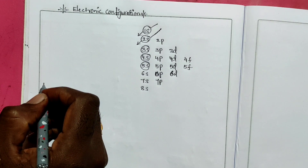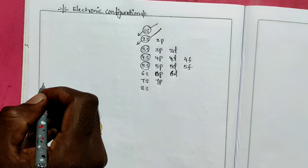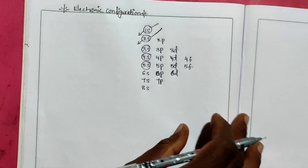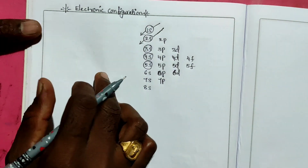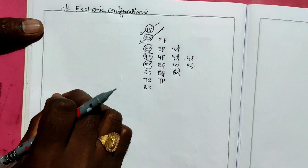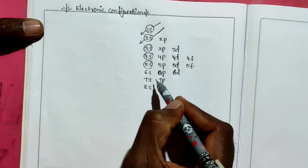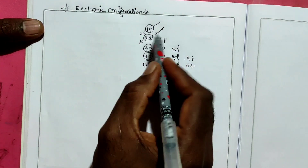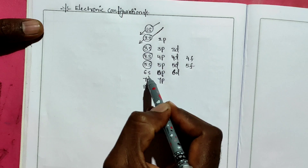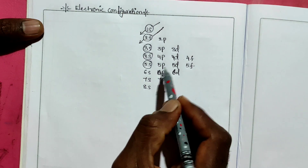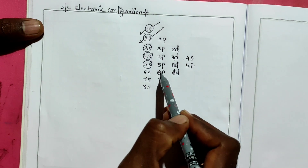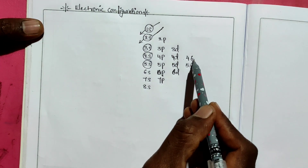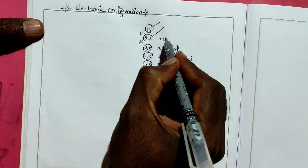Today we will discuss electronic configuration and how to write it for some elements. Based on atomic number we write electronic configuration. In this structure we write: 1s, 2s, 3s, 4s, 5s, 6s, 7s, 8s — then 2p, 3p, 4p, 5p, 6p, 7p — then 3d, 4d, 5d, 6d — and after that 4f and 5f.